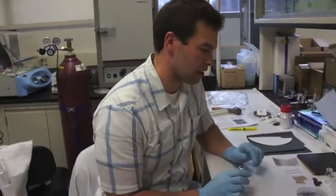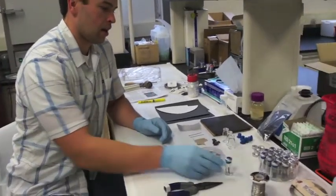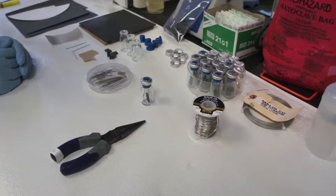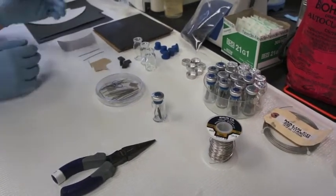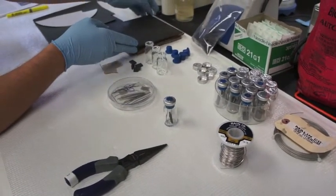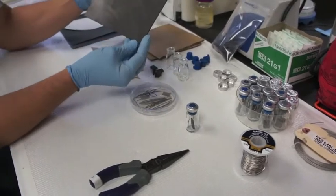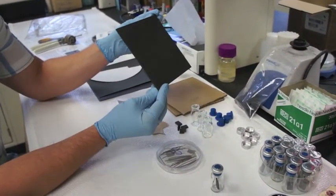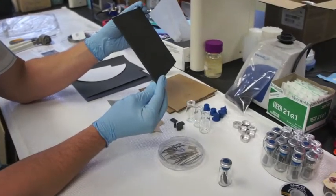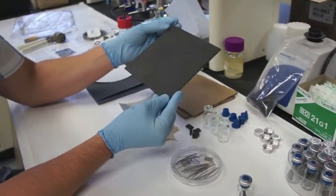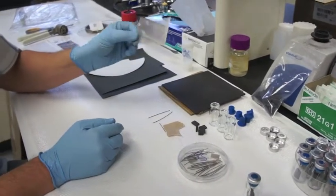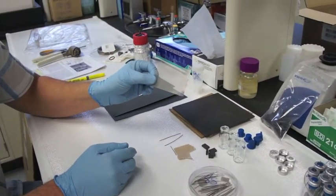A couple of things that you'll need in order to assemble these, all these materials are available commercially. For the anode we use a graphite plate. This is 0.3 cm thickness and for the cathode we just use a simple stainless steel mesh.